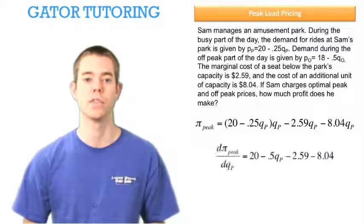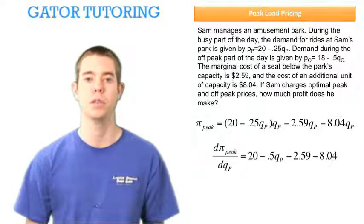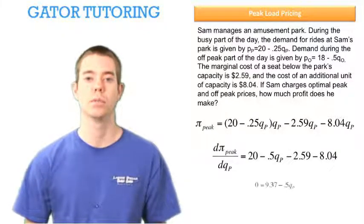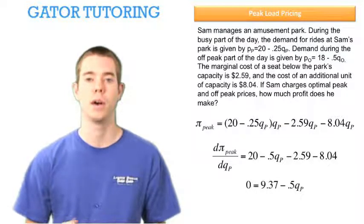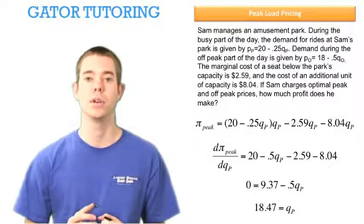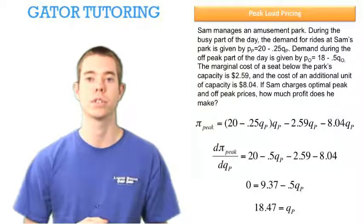Now we're ready to take the derivative of this thing with respect to QP, setting it equal to zero. We can solve. Doing some algebra here, we find that the quantity in the peak period equals 18.47.